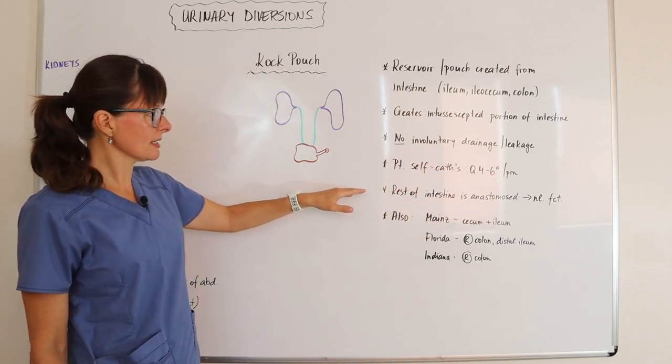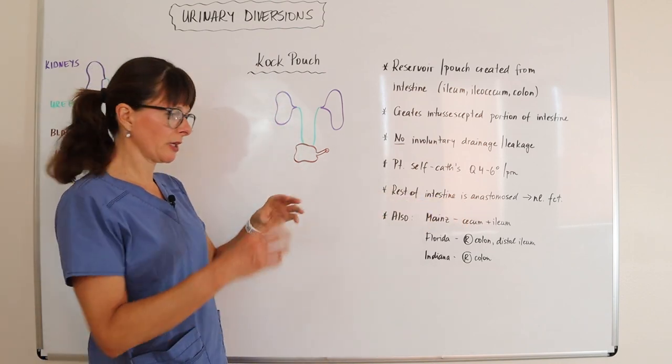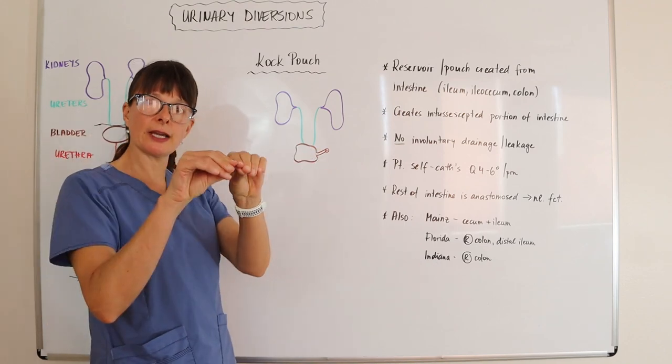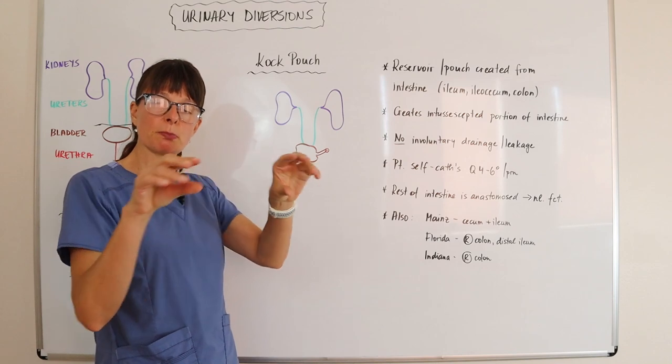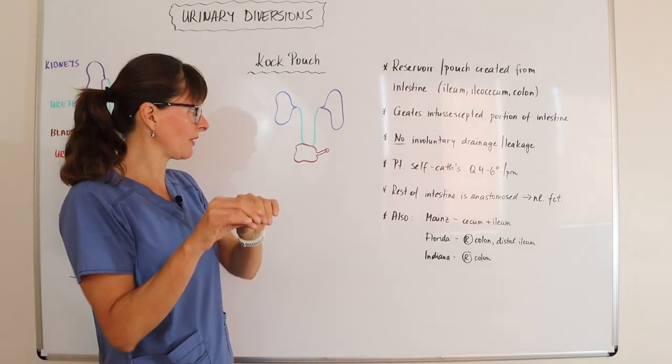The rest of the intestine is anastomosed, meaning that the portion that has been removed is being used for the pouch, and the other two parts are anastomosed, basically meaning sutured together, and the intestine preserves its normal function.